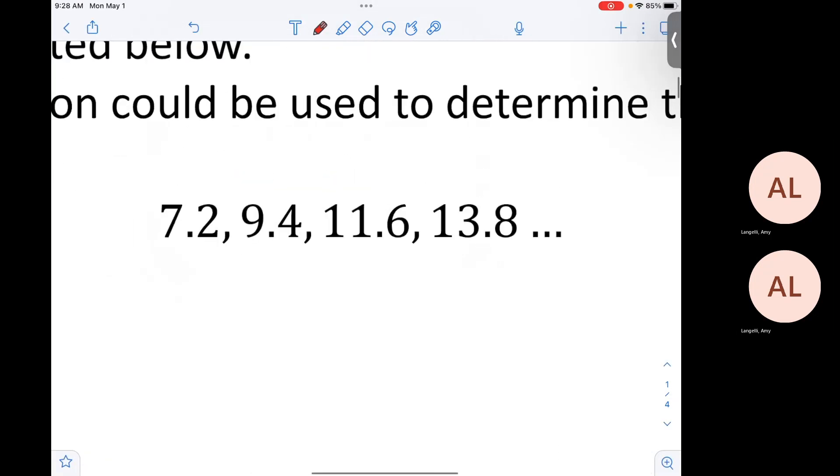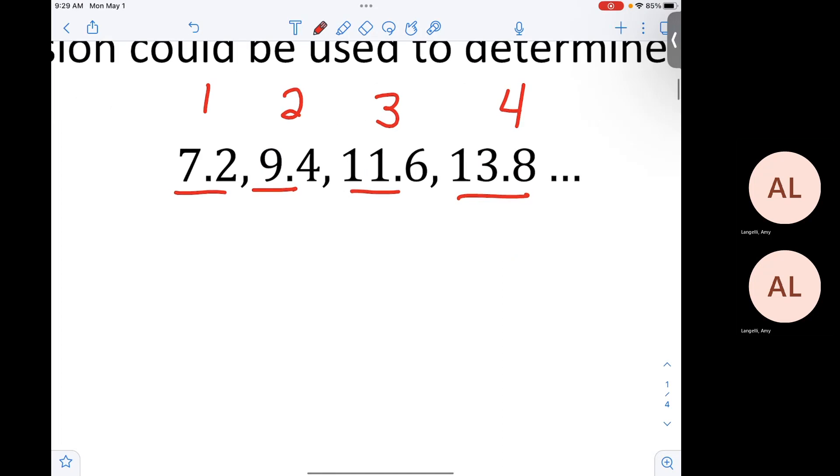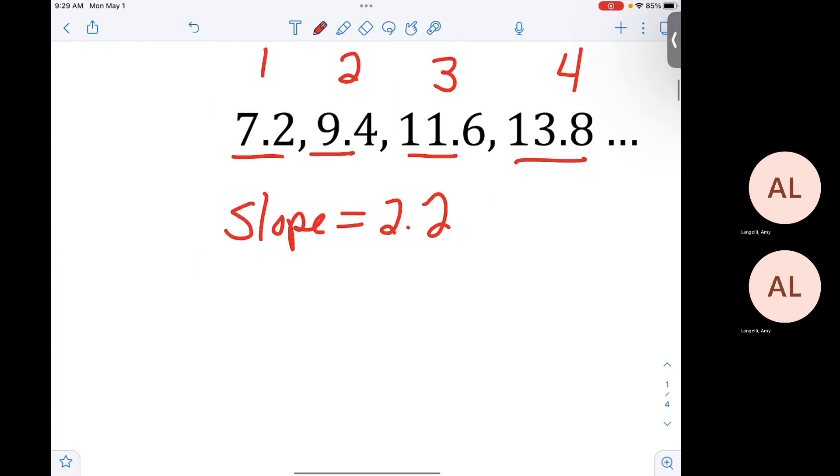This is a list of numbers that has a pattern. I want you to call this place 1, place 2, place 3, and place 4. All right. I'm going to move at this pace. So get yourselves focused so I can move on. So the first thing, you're right. The slope is 2.2, but I need you to do it like this. Do you guys see the slope of being 2.2?